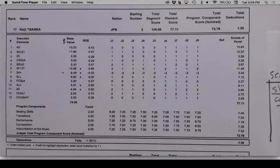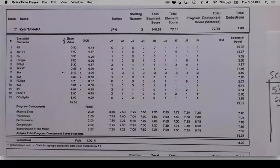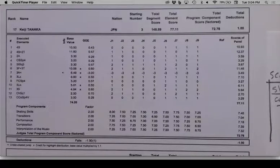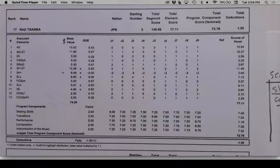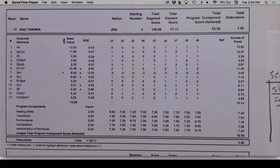So what is there one of for the scorecard that we can put in the scorecard table — besides one skater and one competition? Things that appear once and are not repeated. Around the edges there are things that are only there once. Like maybe the nation, although in reality that's probably a property of the skater, not something to code on the scorecard. But the start number, total score, total element score — various total score things are related to that particular skater's performance at that particular competition.